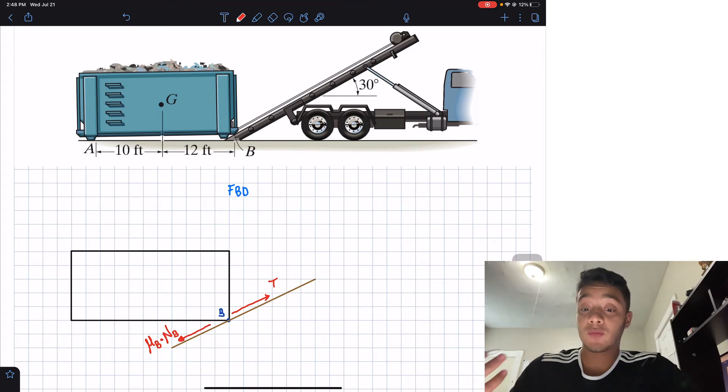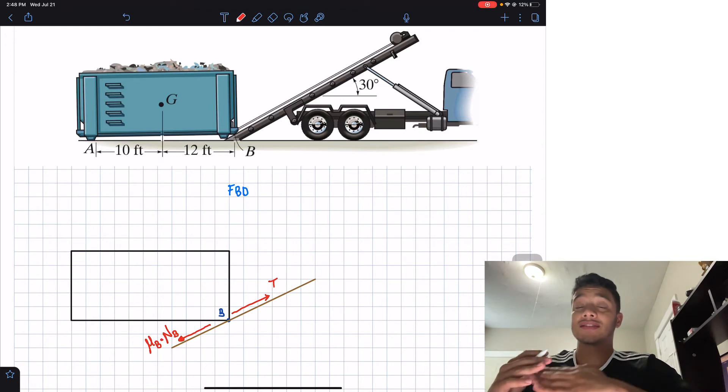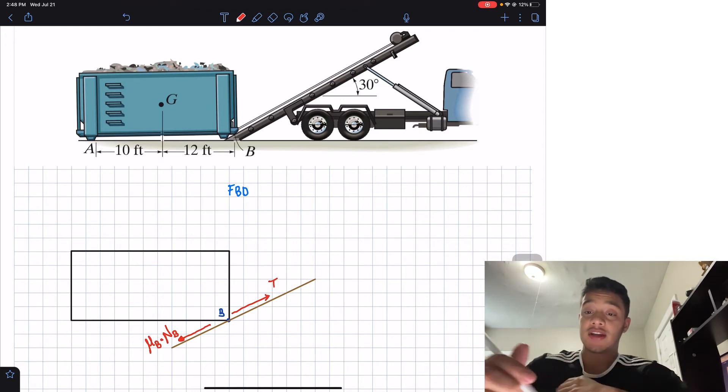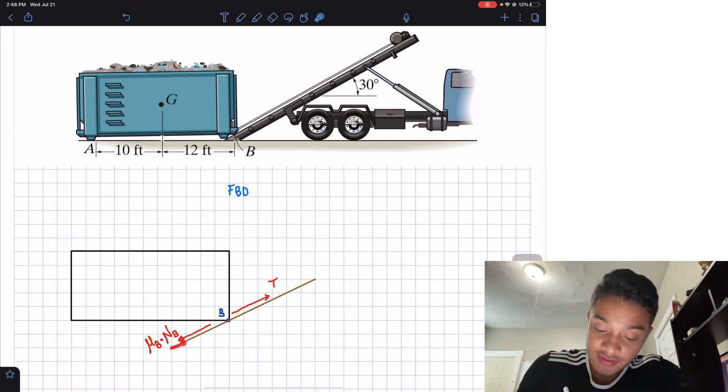Now in here is where we realize, hey, we're missing the normal B. Now the normal B, as I said before, is normal to the surface. And what we mean by normal is exactly 90 degrees from the surface.